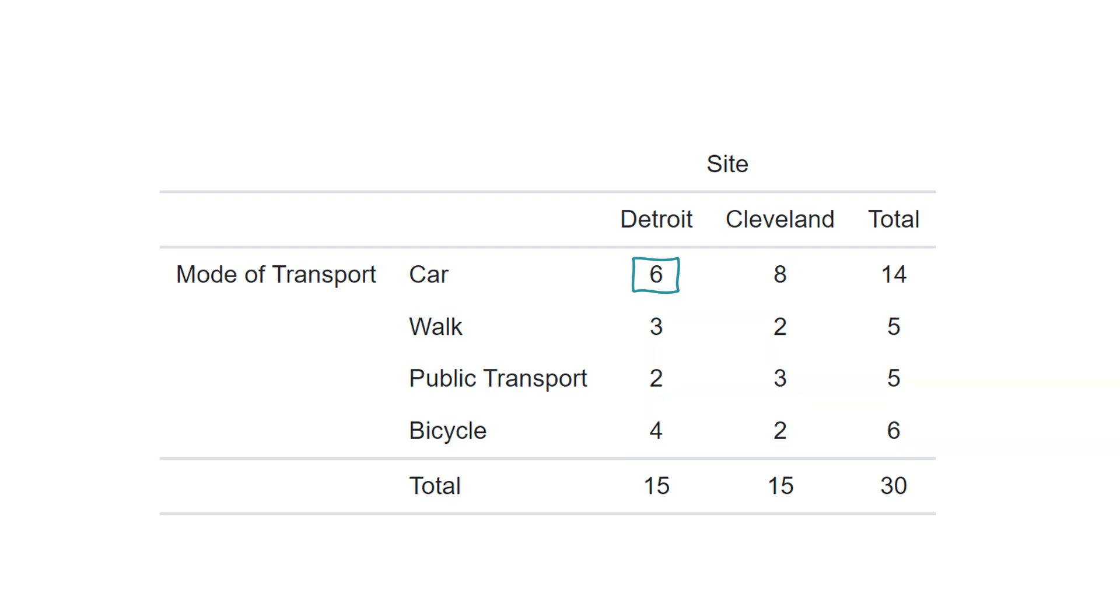For example, the first cell shows that car and Detroit were answered six times. And what about the charts?